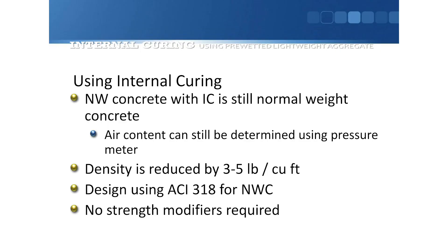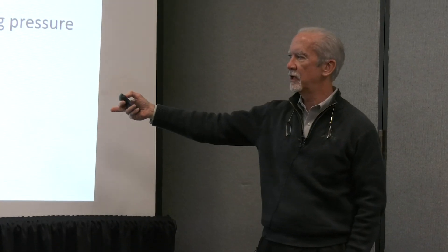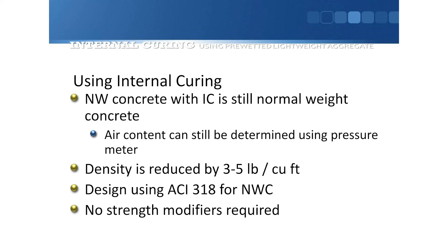A reminder: we're talking about normal weight concrete. When we typically do internal curing of normal weight concrete, the density is only reduced a few pounds per cubic foot — it's still normal weight concrete. You design it according to ACI 318, you don't have to use any strength modifiers, and you can still use a pressure meter to check air content.